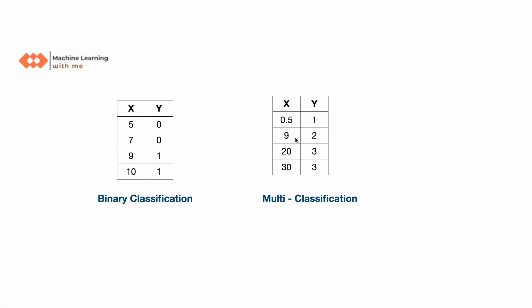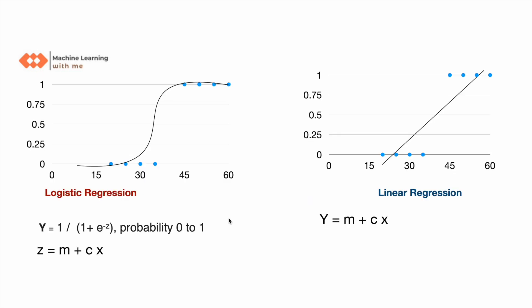Similarly, we do the same thing in multi-classification, where we are trying to see what is the probability of x to be in class y using logistic regression. That's the reason the probability is always between zero and one, so the variable is bounded between zero and one.